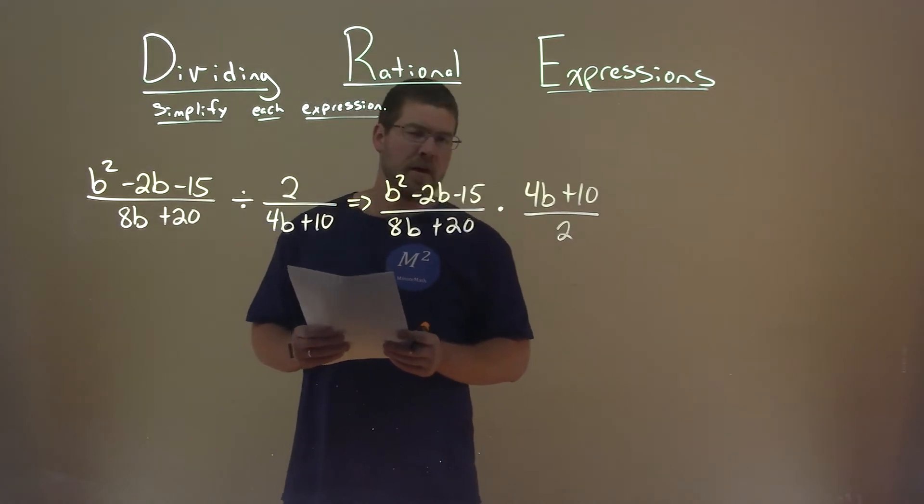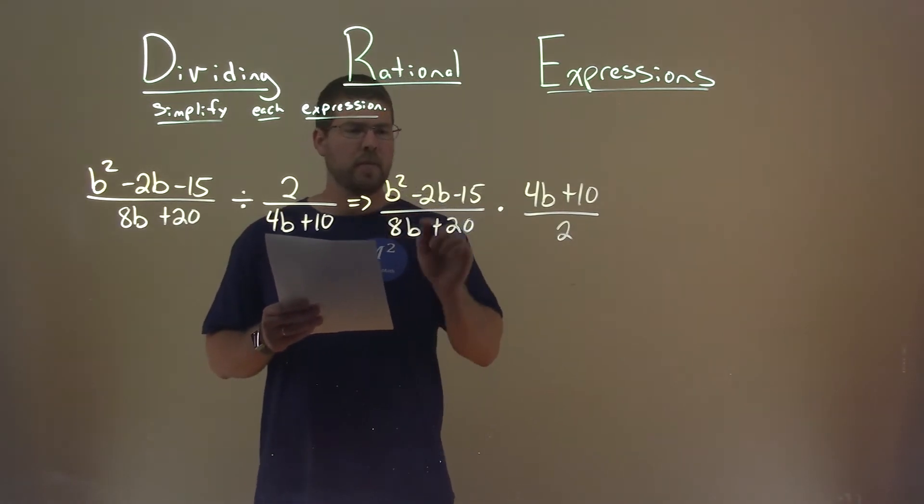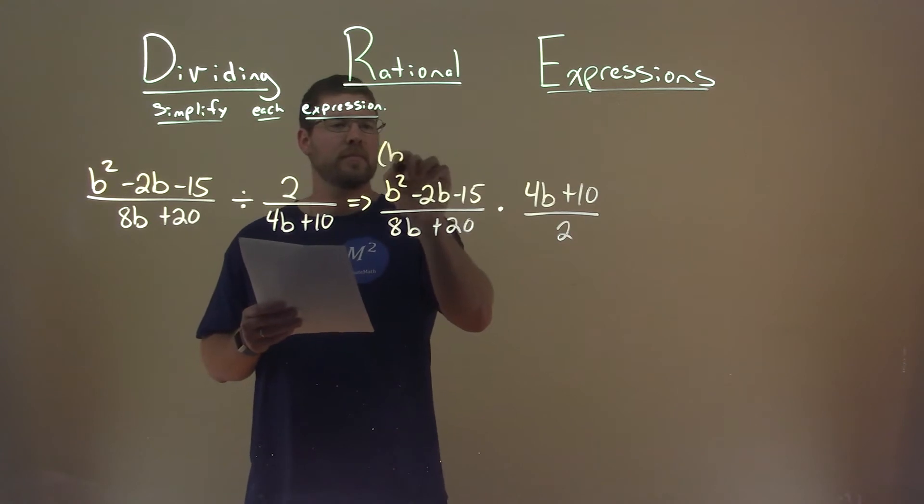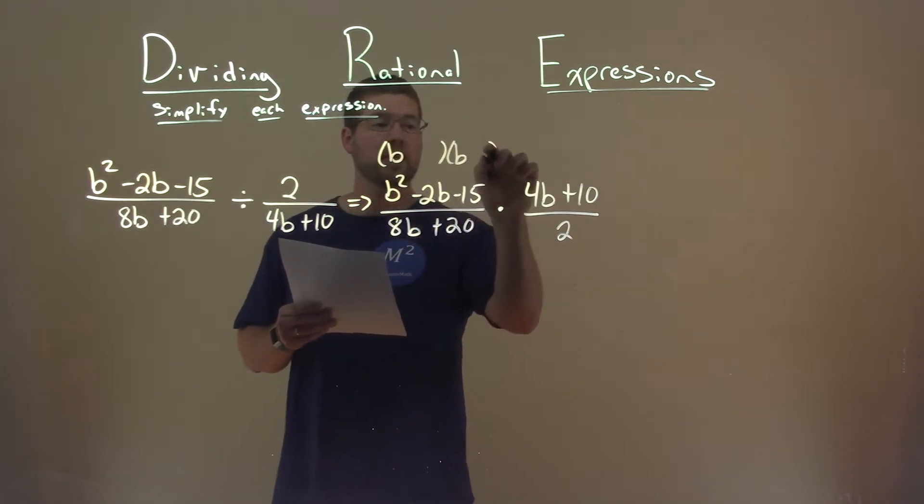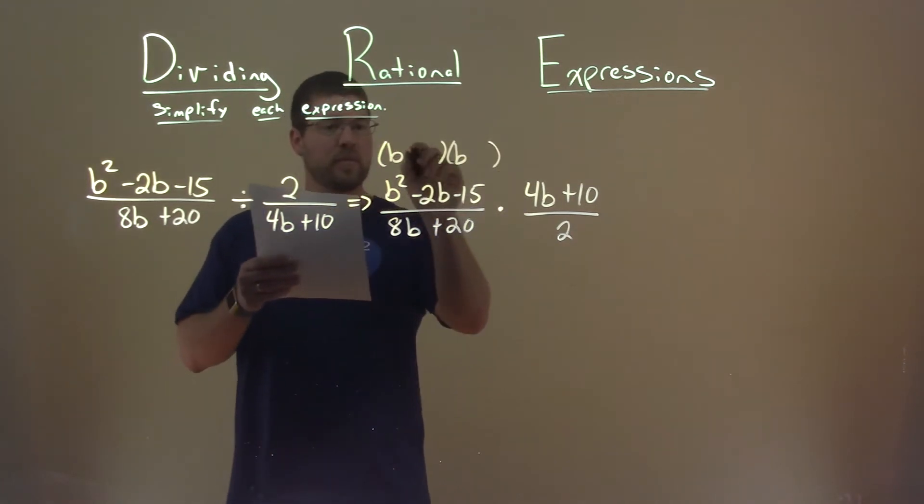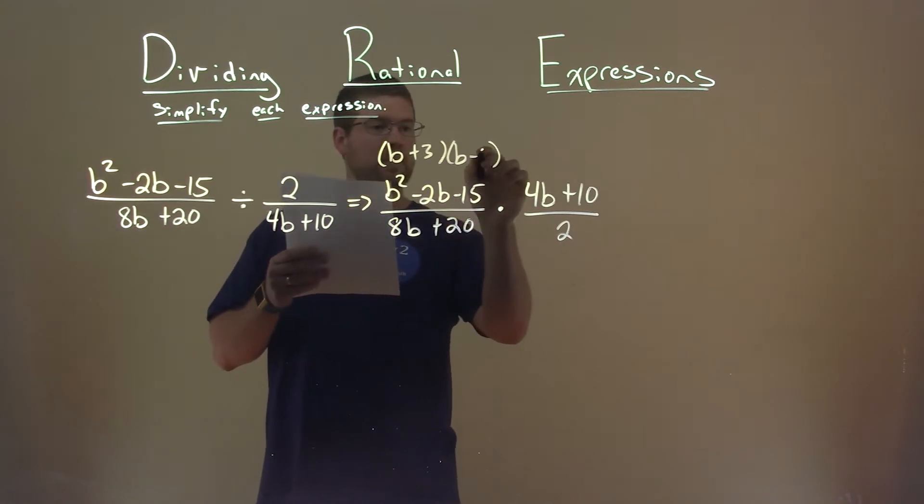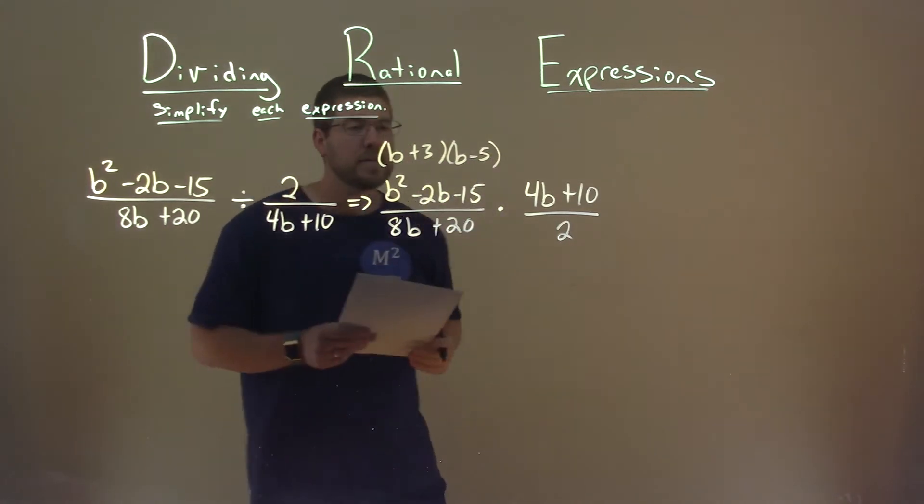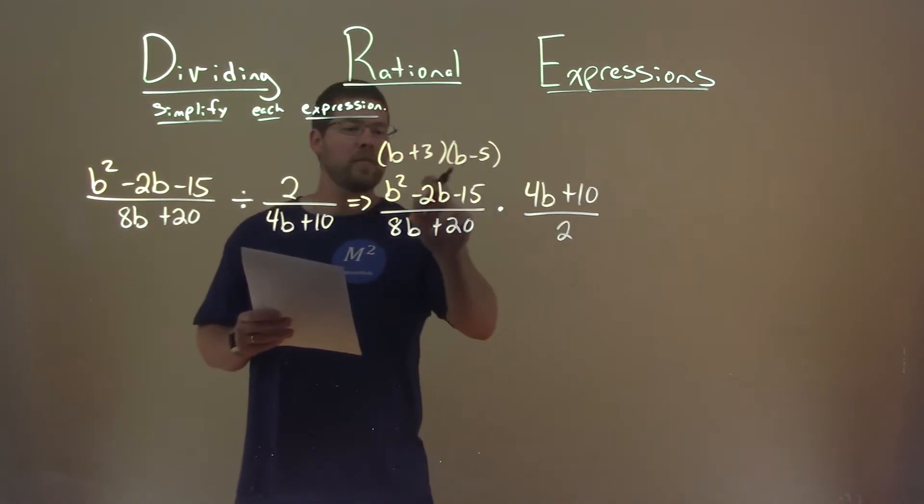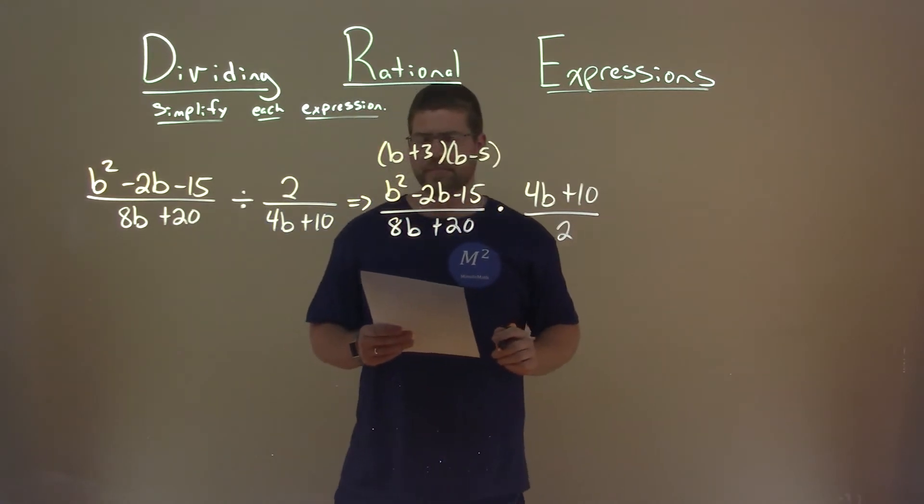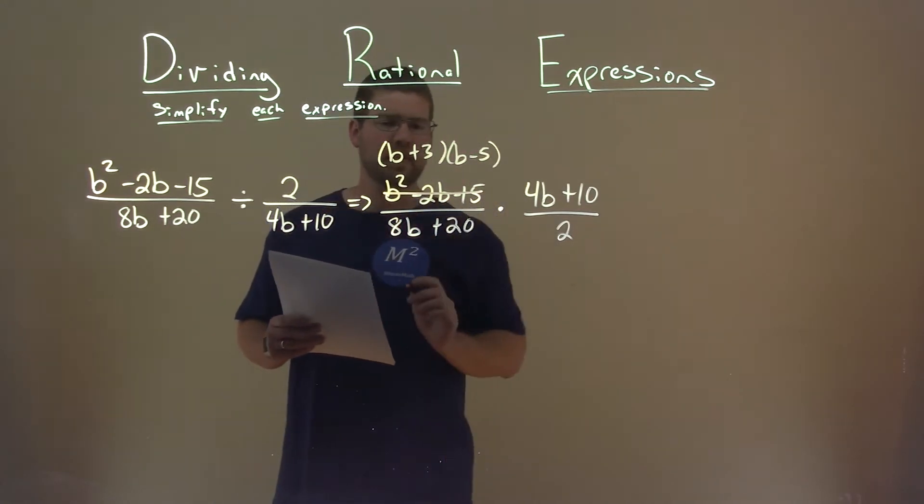But before we do that, I need to factor some. Now, b squared minus 2b minus 15 does factor. What does it factor into? Well, that's a b plus 3, and a b minus 5. 3 times negative 5 is negative 15, but we add the 2, and we get negative 2. So we replace this with its factored form.